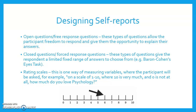Rating scales: this is one way of measuring variables where the participant will be asked, for example, on a scale of 1 to 10, where 10 is very much and 0 is not at all, how much do you love psychology? And we all know that's a big 10.